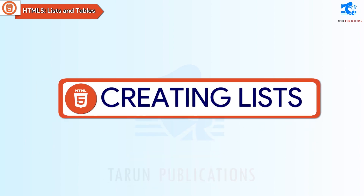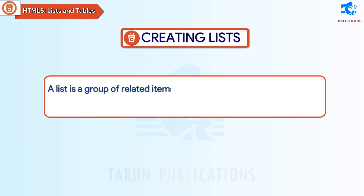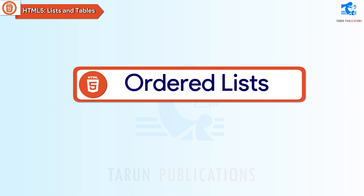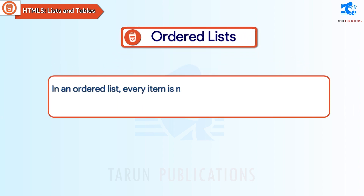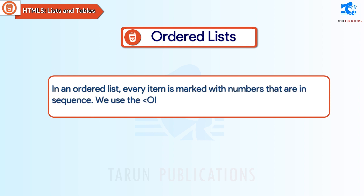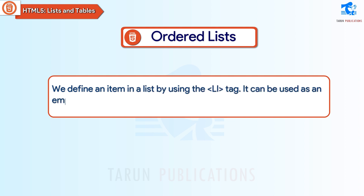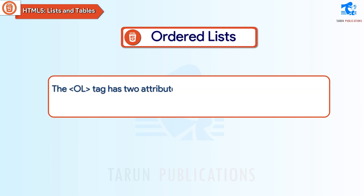Creating Lists. A list is a group of related items. There are three ways of specifying items in a list. Ordered Lists: in an ordered list, every item is marked with numbers that are in sequence. We use the ol tag to create an ordered list in HTML. We define an item in a list by using the li tag. It can be used as an empty tag as well as a container tag. The ol tag has two attributes: